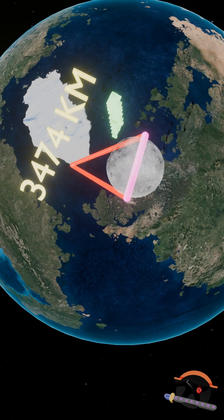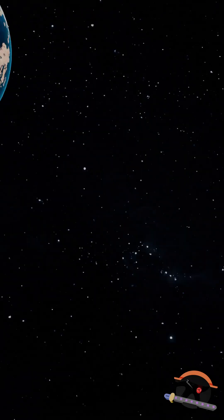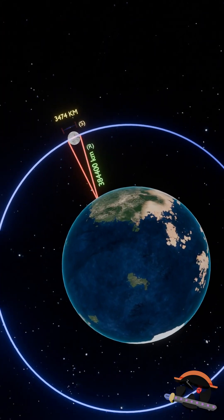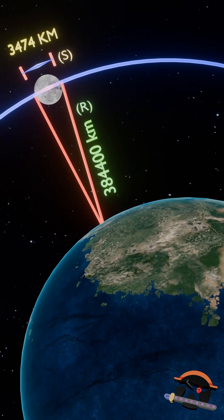So, as earlier, you can consider this diameter of the moon as some distance S, which is part of a much bigger circle. Then, the line connecting earth and moon is nothing but the radius of this bigger circle.